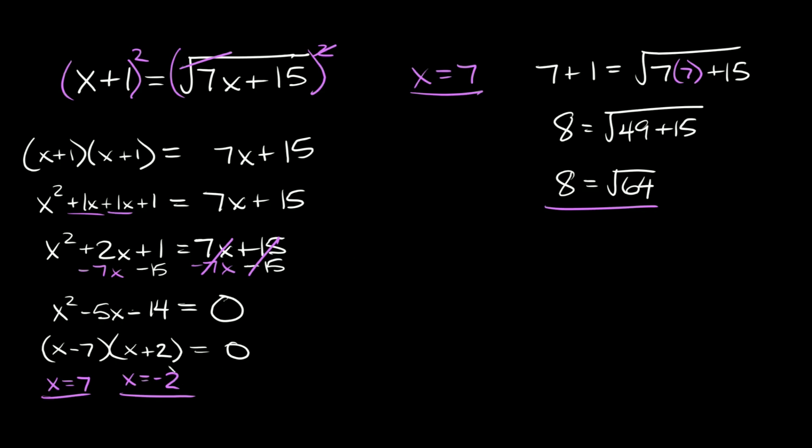Now we need to check x is equal to negative 2. So again, we're going to plug it in for x. So we're going to get that negative 2 plus 1 is equal to the square root of 7 times negative 2 plus 15. So then here we get that negative 1 is equal to the square root of negative 14 plus 15, which is equal to positive 1. So then we get negative 1 is equal to the square root of positive 1.